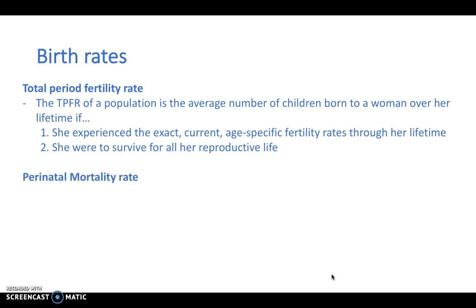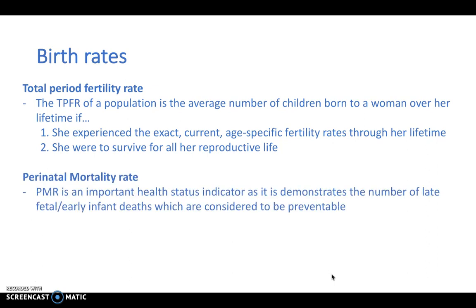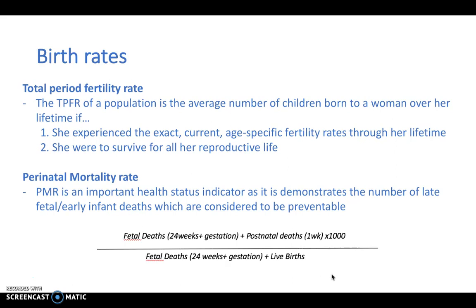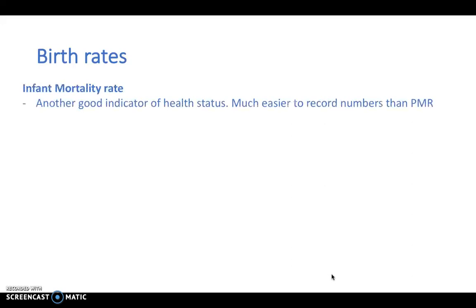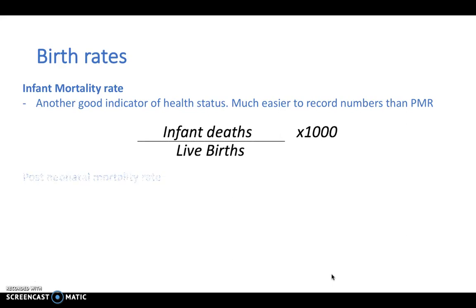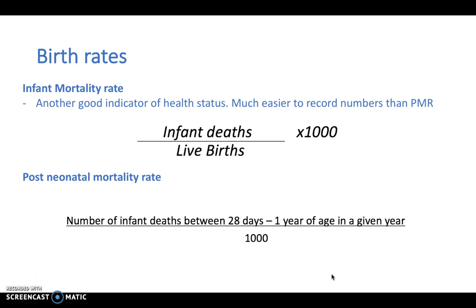The perinatal mortality rate is an important health status indicator because it demonstrates the number of late fetal and early infant deaths which are considered to be preventable. Fetal deaths are considered as anything at 24 weeks plus gestation. Postnatal deaths are within one week. We divide that by all the fetal deaths and live births, and overall we multiply that by a thousand. The infant mortality rate is another good indicator of health status and much easier to record — infant deaths divided by live births times a thousand. The postnatal mortality rate is the number of infant deaths between a month and a year of age in a given year divided by a thousand.